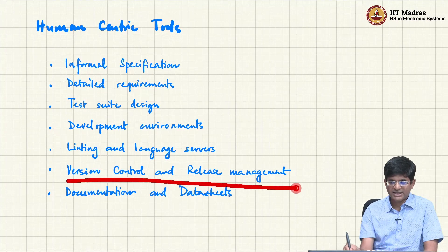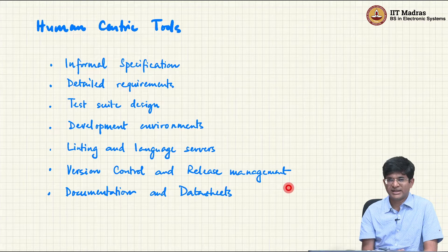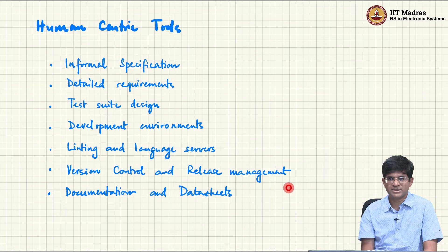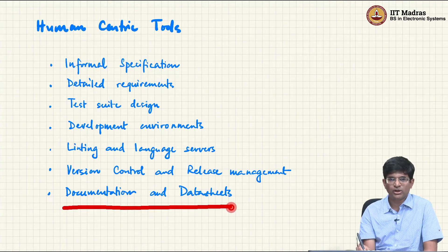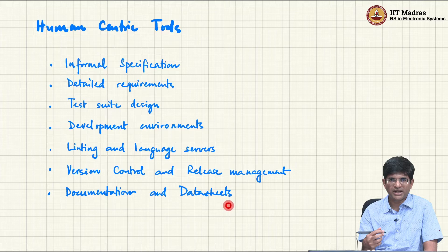Version control and release management is something that hardware design engineers are generally well behind what software engineers use at any given point in time. However, it is essential — you cannot really ignore it; you need to make sure you are familiar with ideas from these contexts. And finally, the ability to create good documentation, data sheets, application notes, and so on. All of these are primarily things where you directly interact between humans.